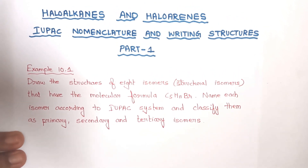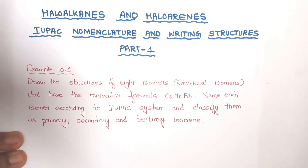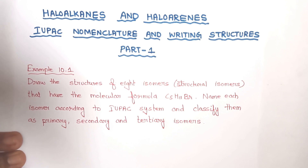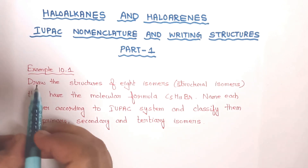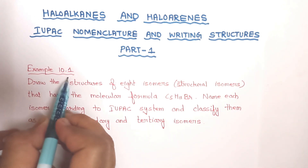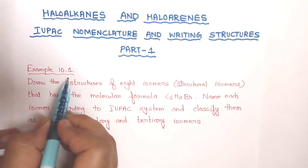Keeping that in view, I have taken some selected topics and tried to discuss the questions given in the textbook — example questions, in-text questions, and exercise questions. All questions will be covered. The first chapter I have taken is haloalkanes and haloarenes, and the topic is IUPAC nomenclature and writing structures of organic compounds. This video is divided into two parts and today is Part 1.